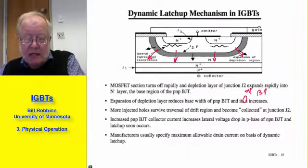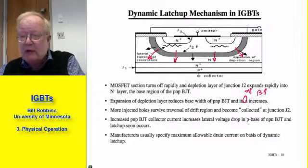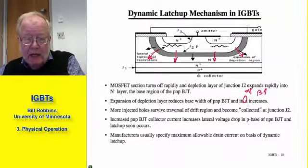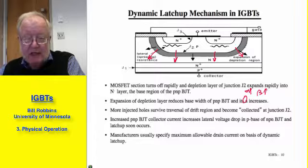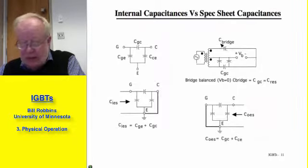Nowadays, modern IGBTs are much more immune to these latch-up mechanisms than in the early days. When IGBTs first came out they were much more prone to latch-up and one had to be more careful. But over the past 15 to 20 years we've learned how to make very good IGBTs which are almost virtually latch-up proof. However, you would be foolish to assume in all situations that even a modern IGBT is completely latch-up proof, so always keep that in the back of your mind when using these devices.